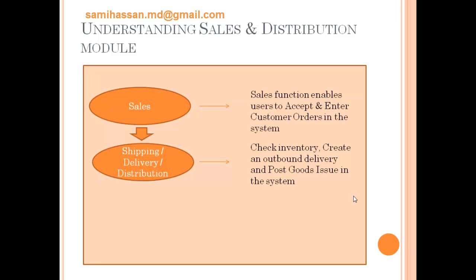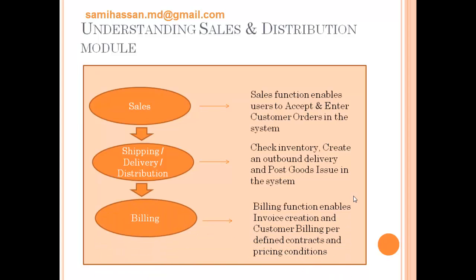You post the goods issue — that is, you have posted that this is available and you're going to give it to the customer in your system. That's what the shipping module does, also called the delivery or the distribution module. And then billing — you want money for what you give the customer. Billing function enables invoice creation and customer billing per the defined contracts and pricing conditions. You might have some customers that you like very much, so you might have given them certain discounts — all automatically factored into the sales and distribution module with per-customer pricing utilized directly during billing.